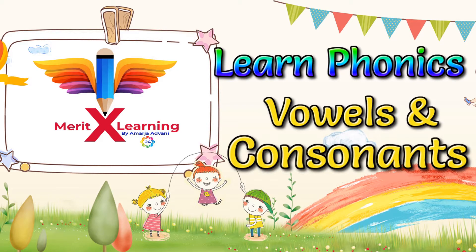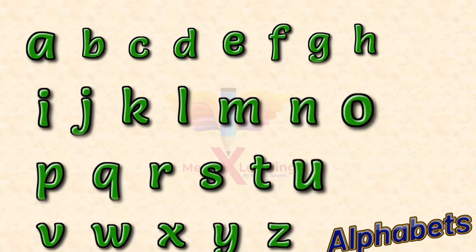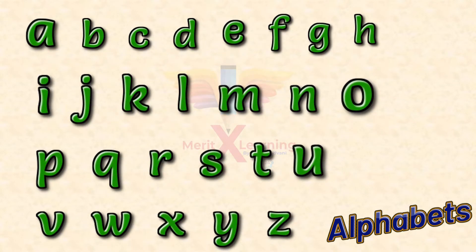Let's quickly get started with our today's topic, vowels and consonants. Let's now start with English alphabets. We all know that there are 26 alphabets in English language.